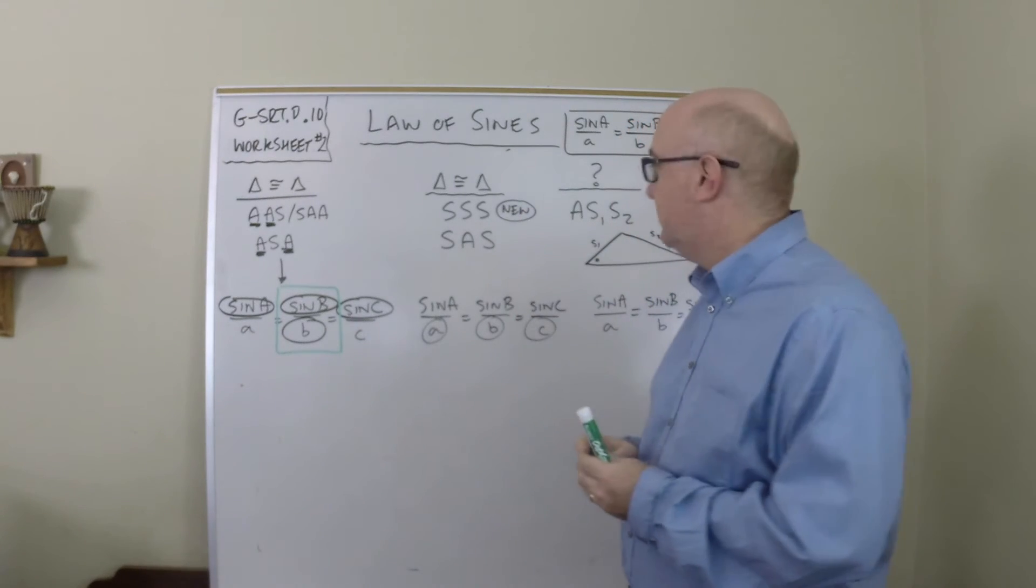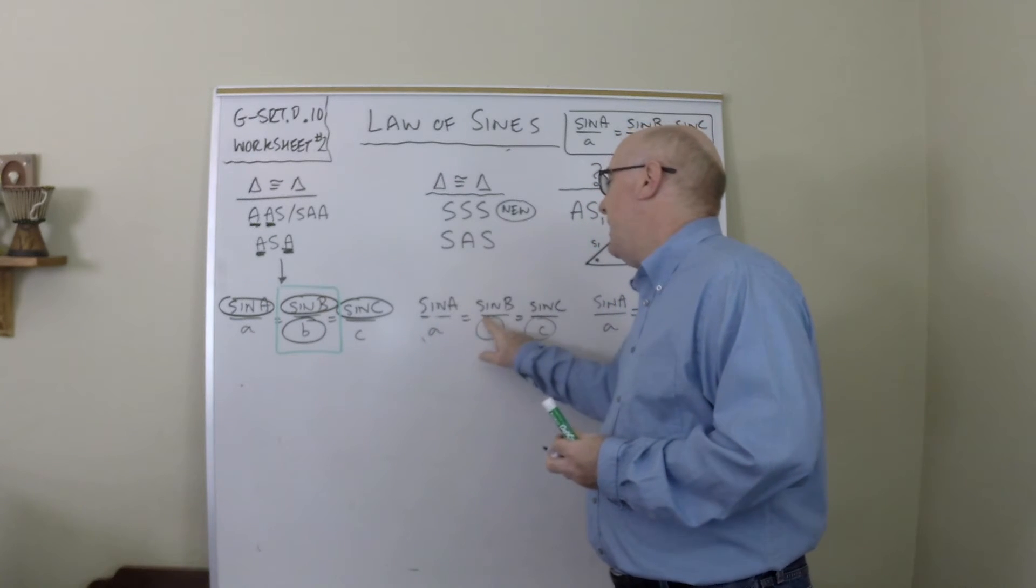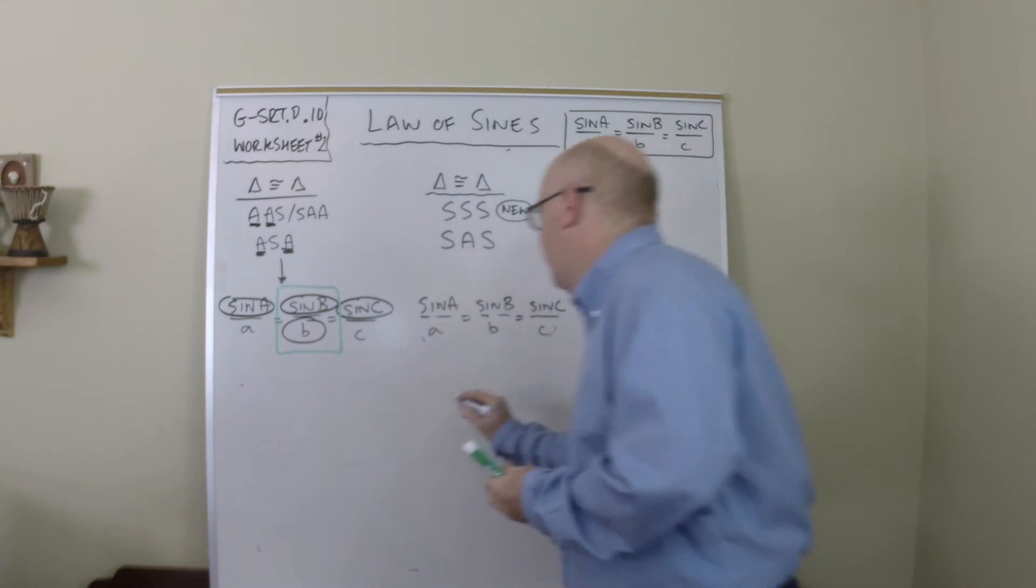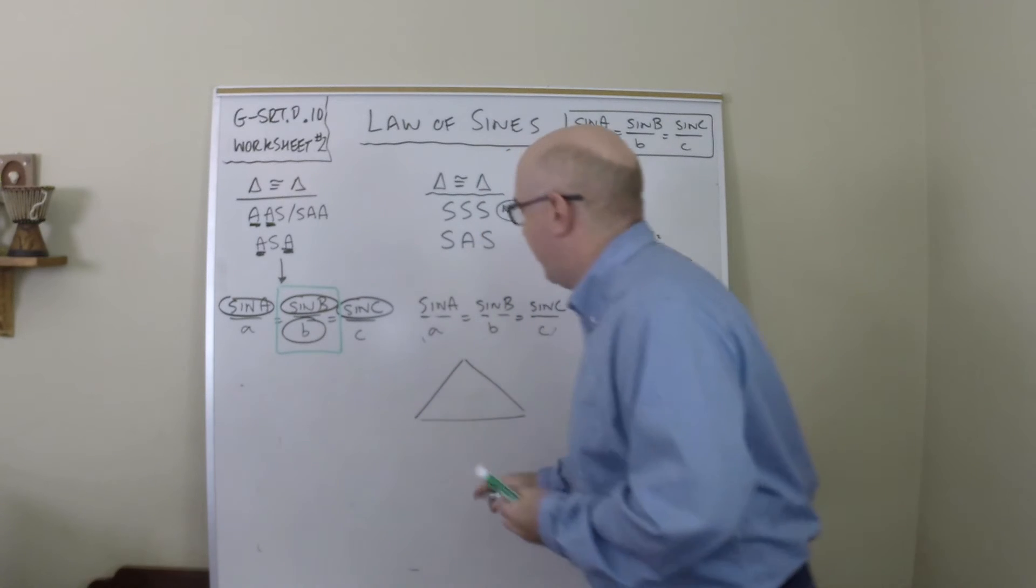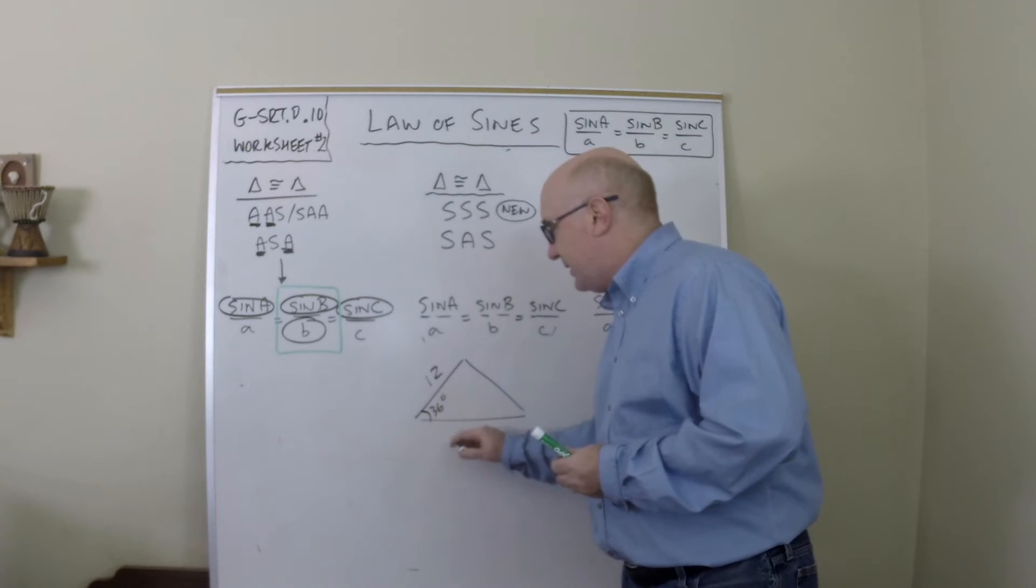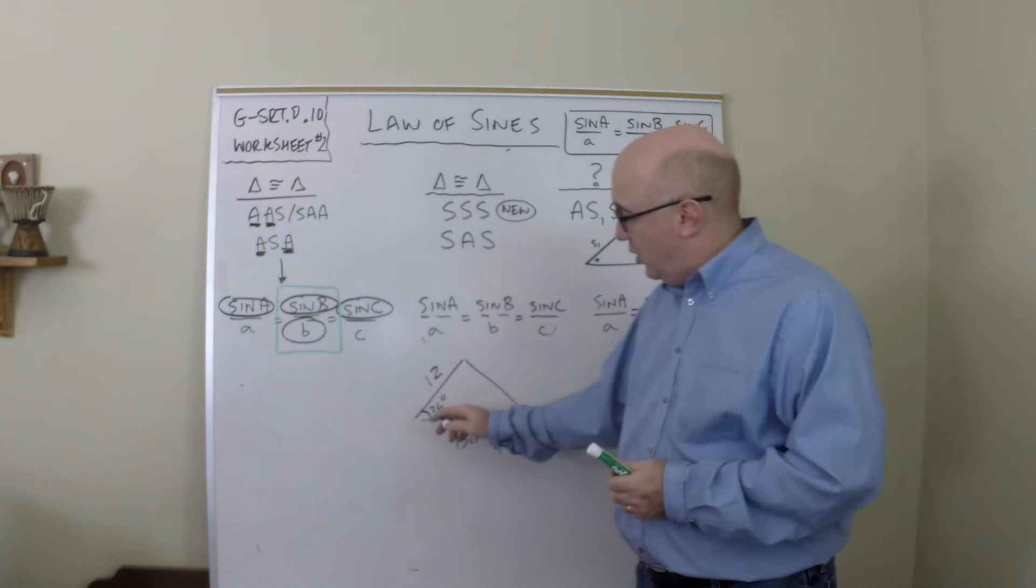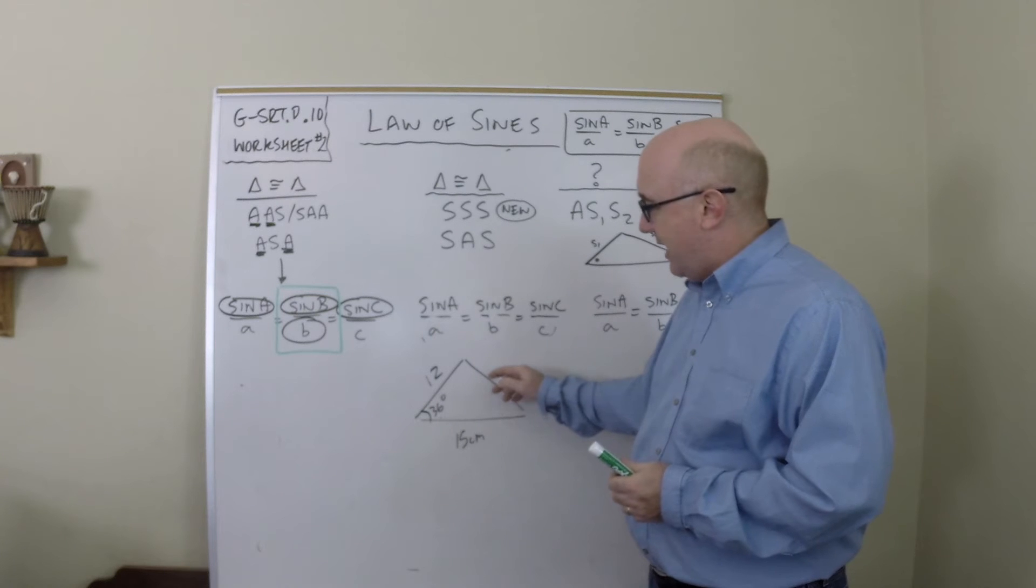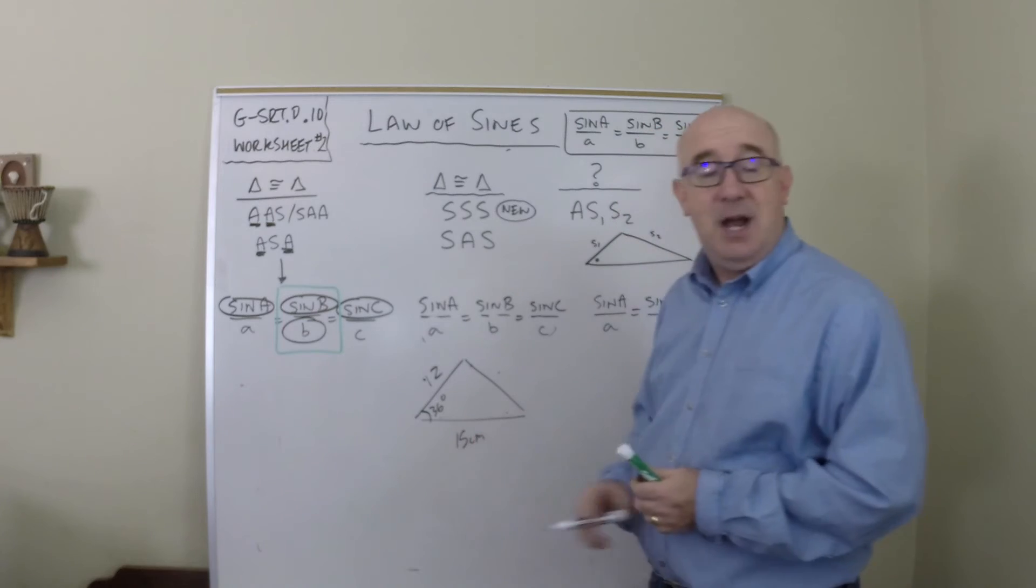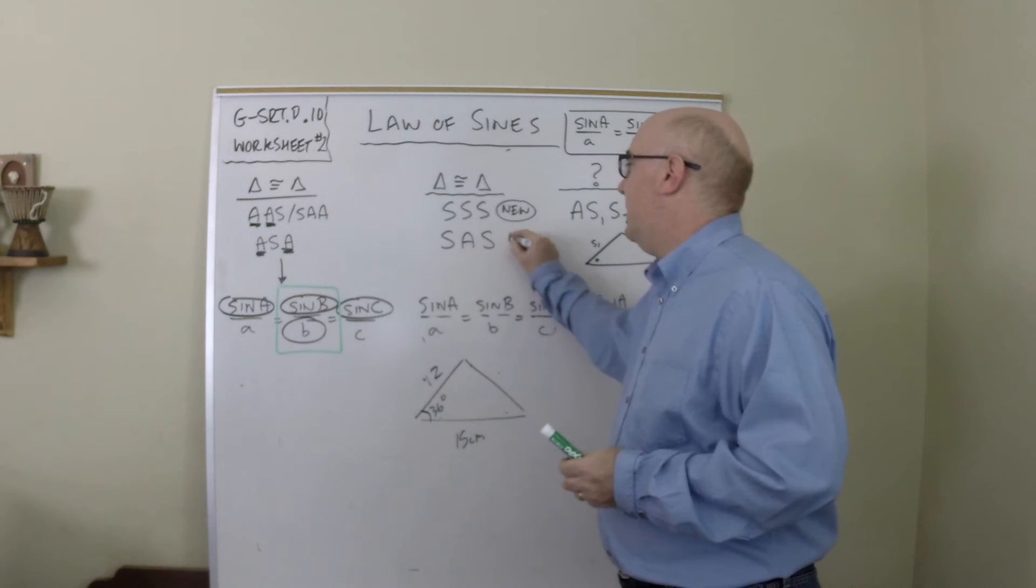This will need something new which is coming, called the Law of Cosines. But for now, you'll need something new. The same problem comes from side-angle-side. You say, 'Well, there's an angle.' If I give you information in the format of a side, this side, this angle, and this side, you'll notice that there is no pairing there either. I know the angle but I don't know its opposite side. I don't know the angle; I know its opposite side. I don't know its angle; I know its opposite side.